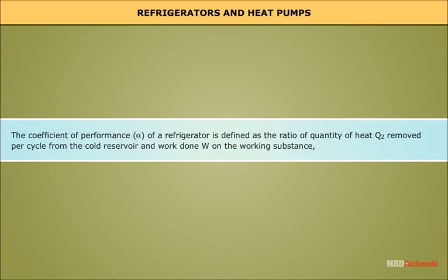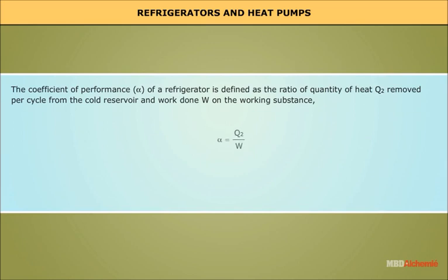The coefficient of performance alpha of a refrigerator is defined as the ratio of the quantity of heat q2 removed per cycle from the cold reservoir to the work done w on the working substance, given by: alpha = q2 / w. We can rewrite the work done equation q1 - q2 = w as: alpha = q2 / (q1 - q2).